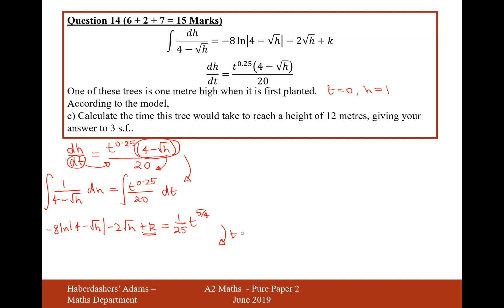Now the next thing to do is substitute in our boundaries. So when t equals 0, h equals 1. The reason we do this is to work out what this value k is. So it's going to be minus 8 ln of 4 minus 1 is 3, minus 2 times the root of h, root of 1. That's just going to be 1, so it's just minus 2 plus k equals, and substitute t equals 0 in, that's 0. So therefore, k is going to be 8 ln 3 plus 2. So there we are. That's the answer for k. So now what I'm going to do is I'm going to move on to the next slide, recalling this formula here with k substituted in there.